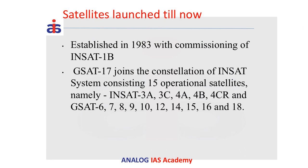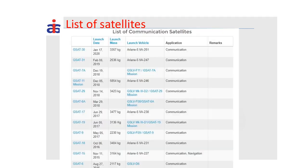The INSAT series began in 1983 when INSAT-1B was commissioned. The latest satellites include GSAT-17, GSAT-31, and various others. After INSAT, ISRO started the GSAT series. Whenever you see the word GSAT or INSAT, it refers to a communication satellite. Please pause the video and look at the list of satellites launched in recent times.